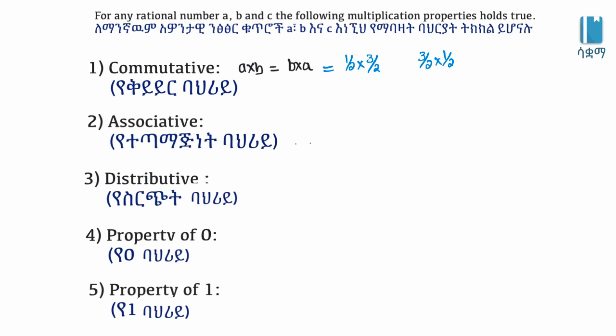1 over 2 times 3 over 2: 1 times 3 is 3. 3 times 1 is 3. So rational numbers have the commutative property. Now let's look at the associative property.